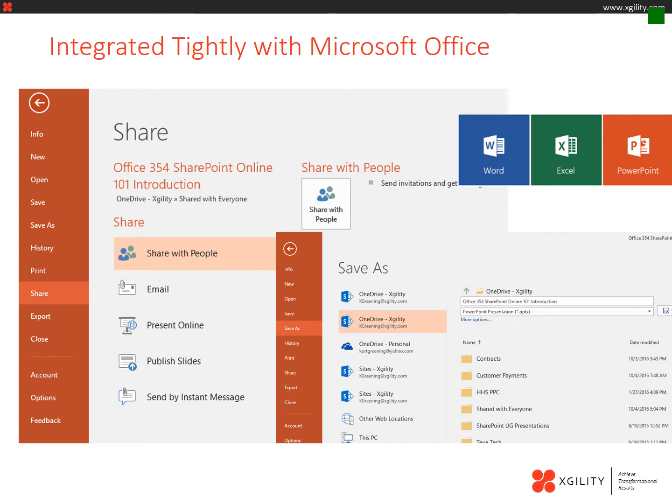Many organizations ask me: why use Office 365 for file storage when there are plenty of other ways to store files — whether you're talking about file shares, Box, Dropbox, or any of the various cloud storage solutions out there? The key difference is that both OneDrive personal storage and SharePoint team sites are tightly integrated with Microsoft applications such as Outlook, Word, Excel, and PowerPoint.